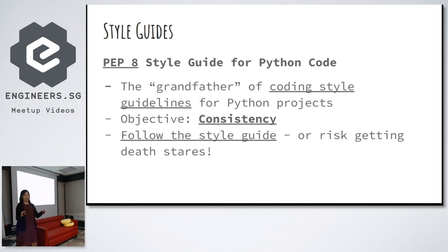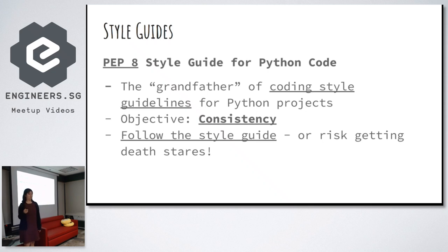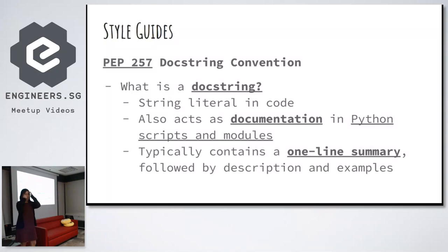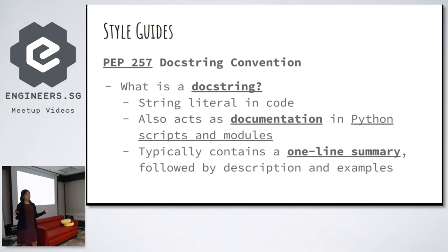You have to follow the style guide or you'll get a death test — in this case a digital death test. We talked about PEP 8 style guide, but there's one other style guide you could easily overlook: PEP 257. PEP 257 is about docstring conventions. What is a docstring?